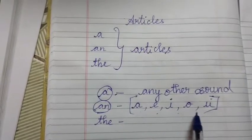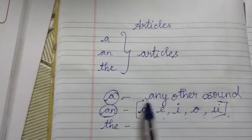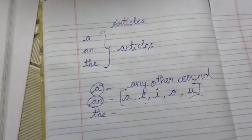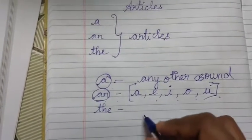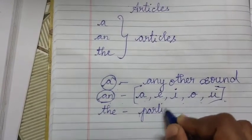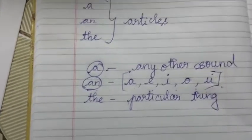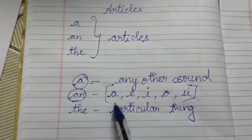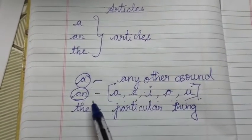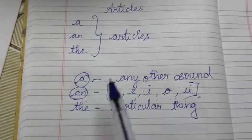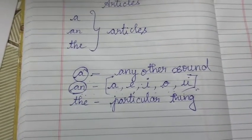If we have A, E, I, O, U, we can add 'an' to it. If we don't have a vowel, we can use 'a'. And where we can use 'the' — we can use 'the' when we talk of a particular thing. If a sentence is indicating a particular thing, we can use 'the'. The main thing you have to remember is the vowel sound: A, E, I, O, U. If the sentence has vowels, use 'an'; if not, use 'a'; and if the sentence talks about a particular thing, use 'the'.